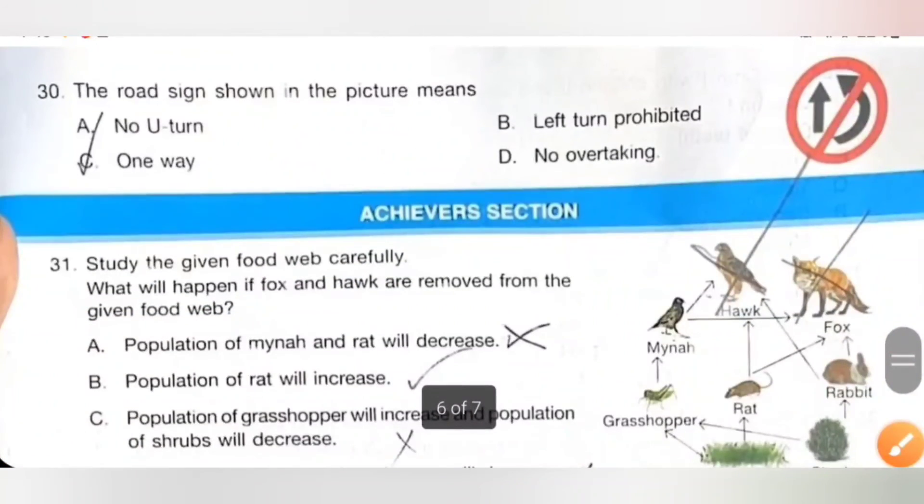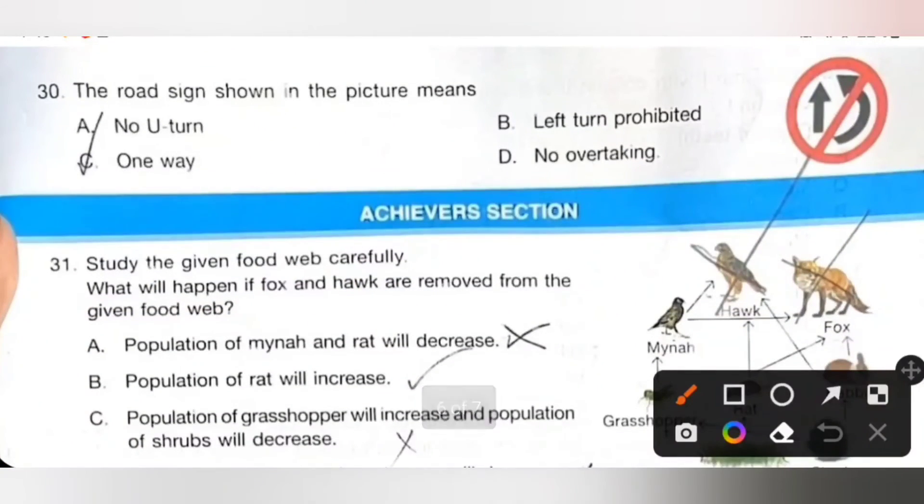Thirtieth: The road sign shown in the picture means A: No U-turn, B: Left-hand prohibited, C: One way, D: No overtaking. The road sign shown in the picture means no overtaking. Option D is the correct answer.